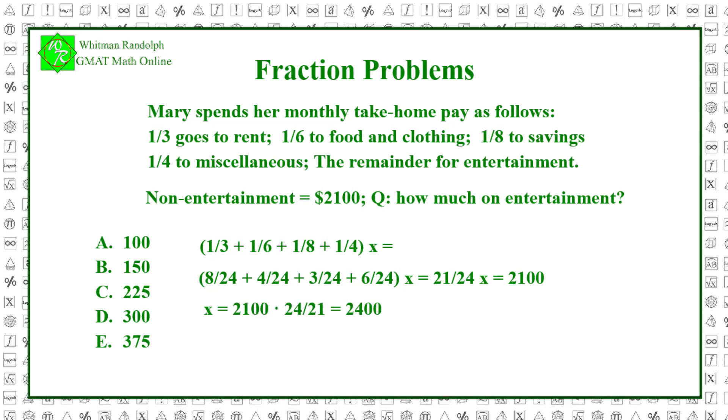So, x equals twenty-one-hundred times twenty-four over twenty-one, which equals twenty-four hundred. That's her take-home pay. Now, to get her entertainment expenditure, we simply subtract twenty-one-hundred from twenty-four-hundred, and we get $300. So, the correct answer is D.